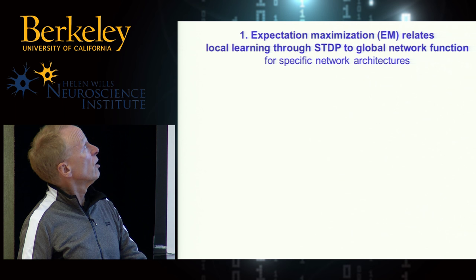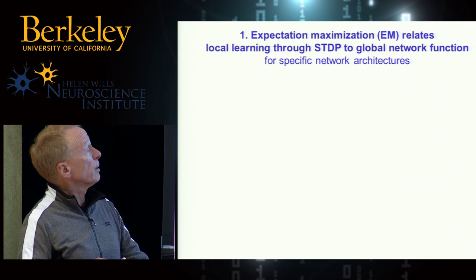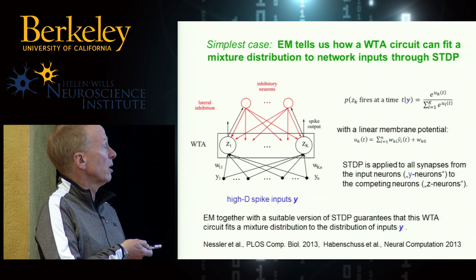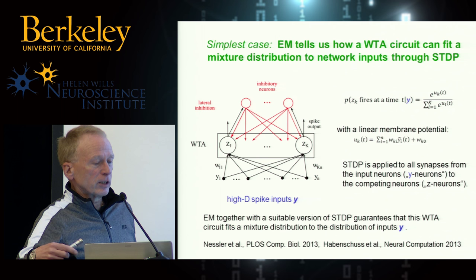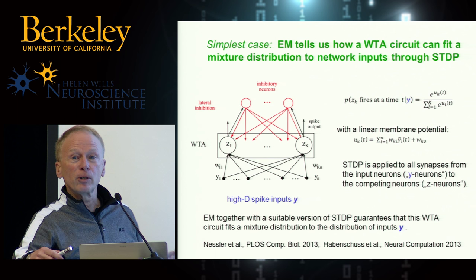Let me first talk about expectation maximization. This builds on work published a few years ago by Nessler et al. One feature of this first principle, EM, is that you can't apply it to an arbitrary architecture — it needs a particular architecture to work well.